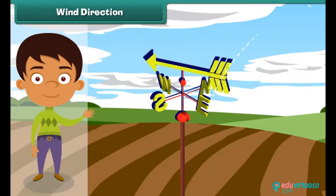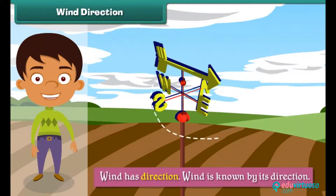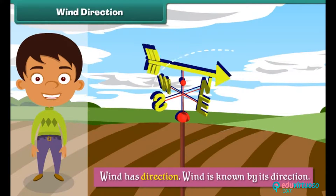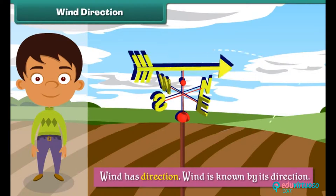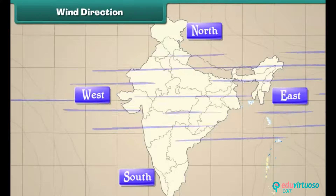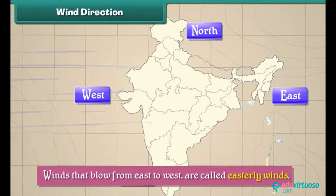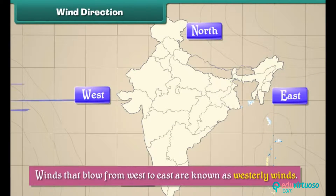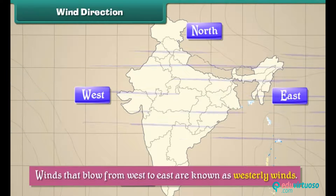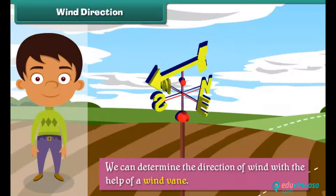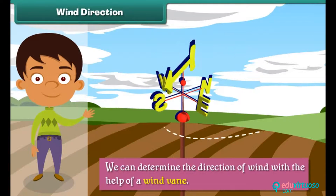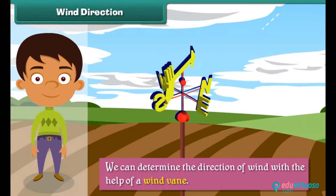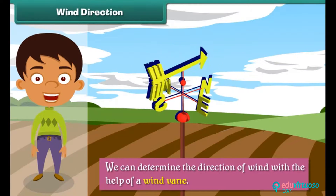Wind has direction and is known by the direction from which it blows. For example, winds which blow from east to west are called easterly winds. Similarly, winds that blow from west to east are known as westerly winds. We can determine the direction of wind with the help of a wind vane. The arrow of the wind vane indicates the direction from which the wind is blowing.